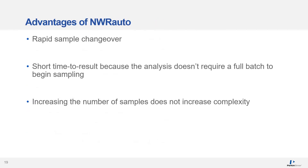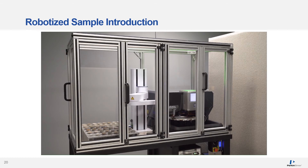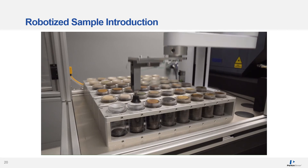Some of the advantages of NWR Auto are a rapid sample changeover, a short time to result since we don't have to wait for the chamber setup and purge, and a reduction in overall operation complexity. This system can be scaled up to industrial levels — the roboticized system can analyze up to 2,000 samples per day and can be integrated with a barcode reader. All the operator needs to do is add more samples.